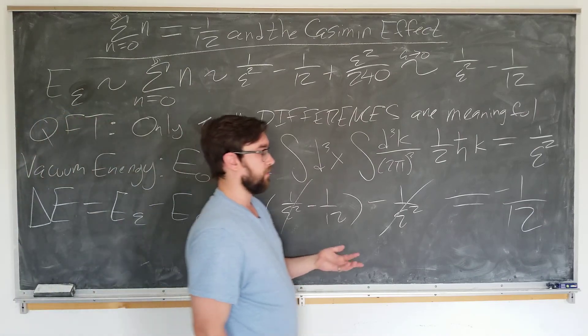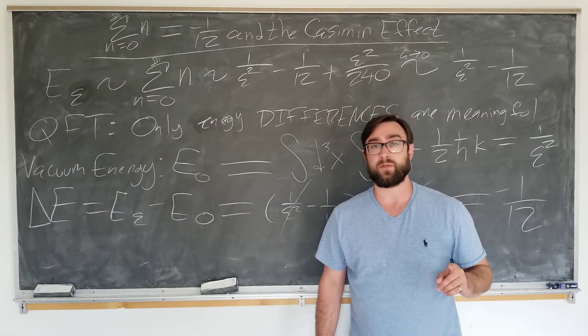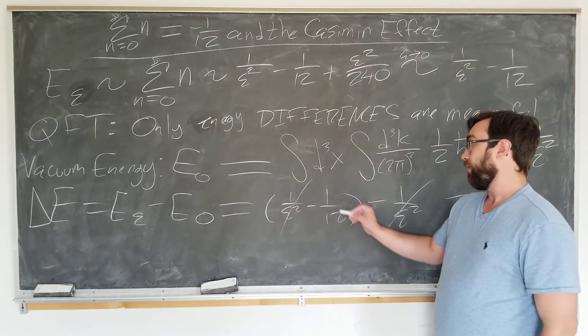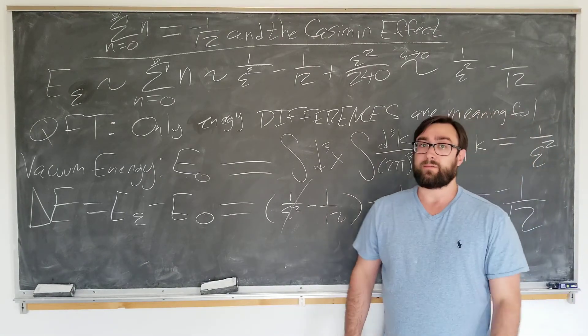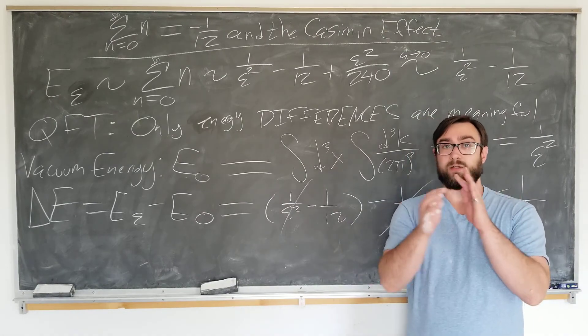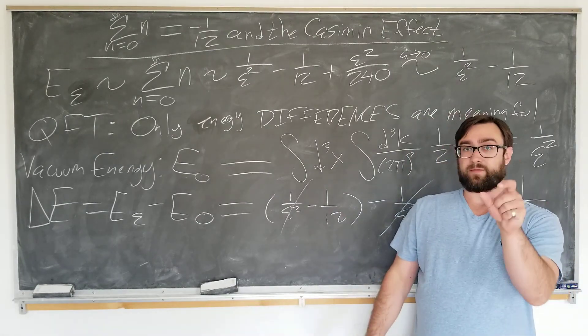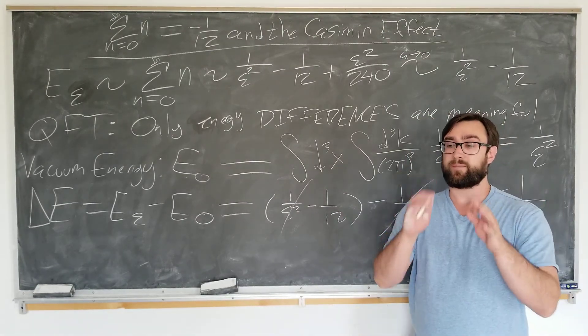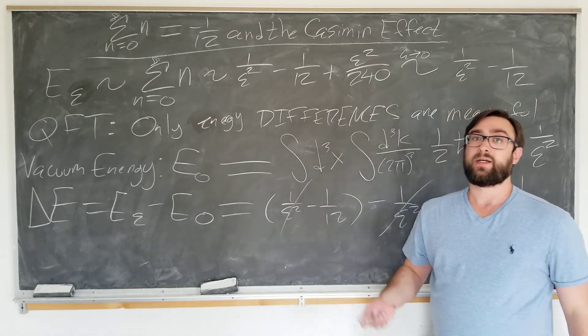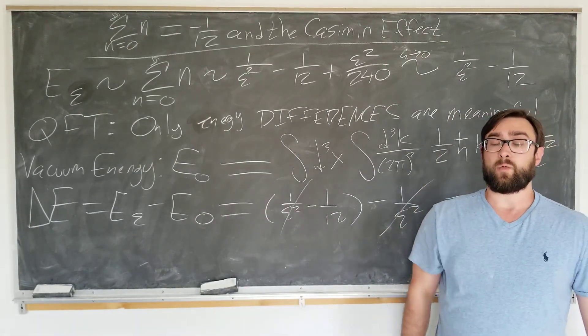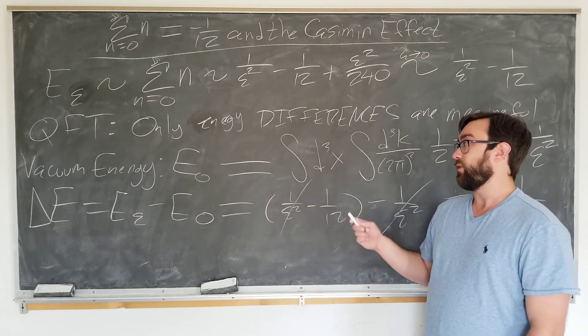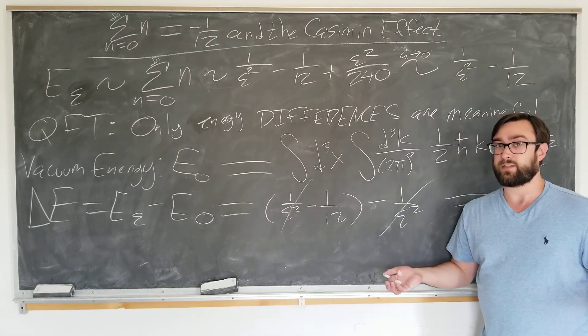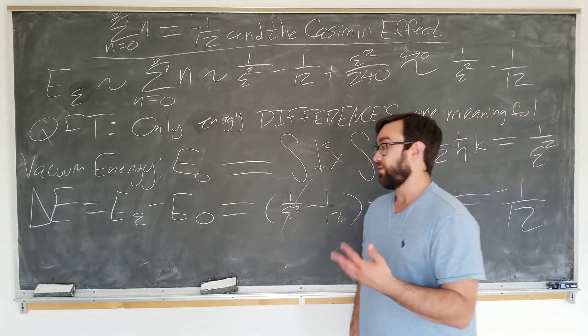I just want to tell you a few caveats. Number one, if you look in a quantum field theory textbook, this is not how they're going to show you that the infinities cancel out. They're actually going to consider three parallel plates, look at the forces between them, subtract those forces, and then we're going to see the infinities canceling out in that way. We just considered energy, but this is a more heuristic example of how the energies can cancel out.